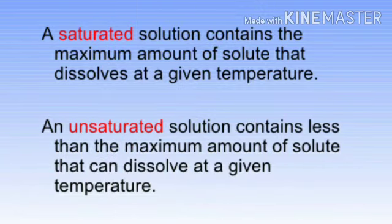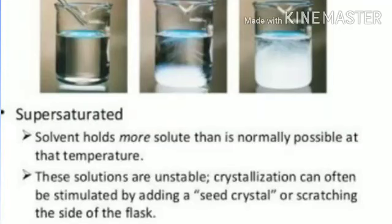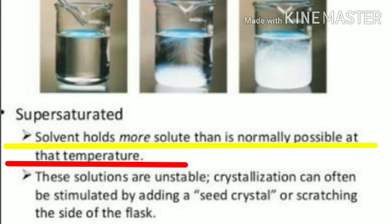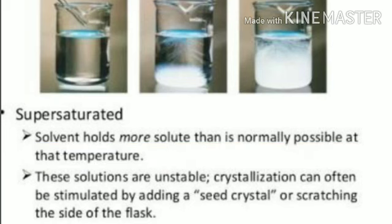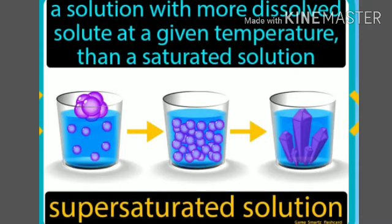The third type is a supersaturated solution. If we increase the temperature of a saturated solution and dissolve more solute than the normal saturation point, the solution becomes supersaturated — meaning the amount of solute is more than the saturation point. Sometimes, if we then decrease the temperature of a supersaturated solution, the undissolved solute particles settle at the bottom.